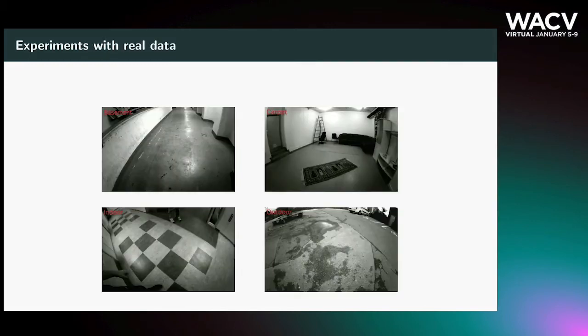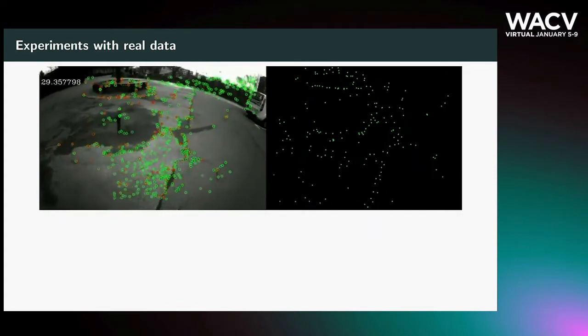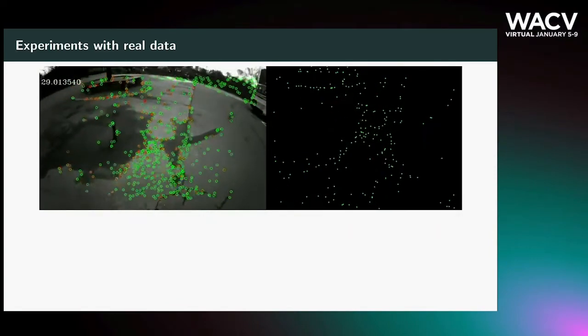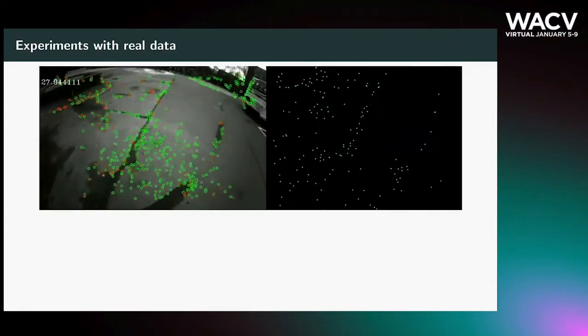Let us look at some of the experiments. We perform our evaluation on real datasets captured using a UAV with a monochrome global shutter camera equipped with an IMU. The ground truth was obtained using a complete SLAM system where the reprojection error and IMU error were minimized.